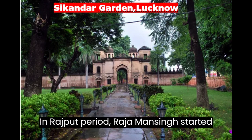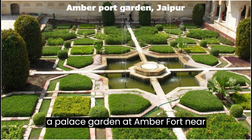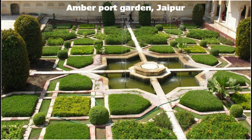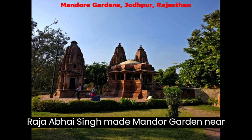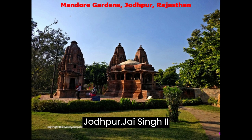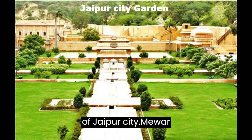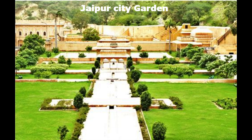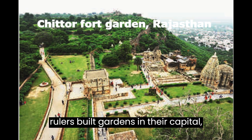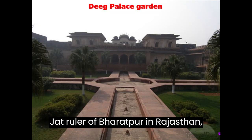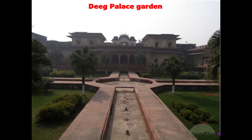In the Rajput period, Raja Man Singh started a palace garden at Amber Fort near Jaipur, completed by Jai Singh II. It has three terraces and a lake. Raja Abhai Singh made Mandar Garden near Jodhpur. Jai Singh II established a palace garden in the heart of Jaipur city. Mewar rulers built gardens in their capital Chittor. Suraj Mal, Jat ruler of Bharatpur in Rajasthan, founded the palace garden at Deeg.